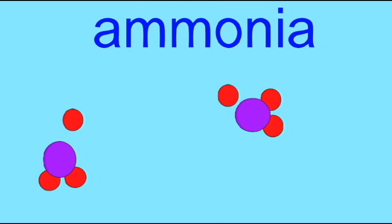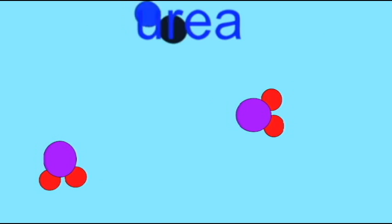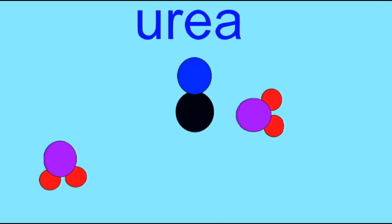So therefore the liver takes amino groups, adds a central carbon and oxygen to two amino groups from two separate amino acids to convert this into the much less toxic form of urea which has little effect on pH.